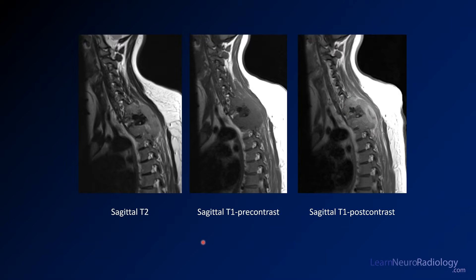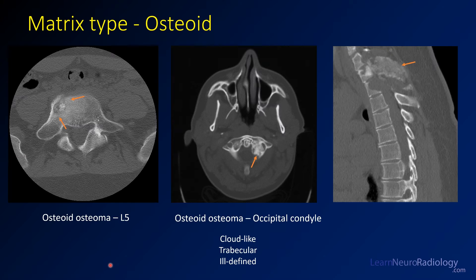When evaluating this mass you need to be thinking about aggressive lesions because of the extent of bone destruction and the associated soft tissue mass. Based on the features we've seen so far we know this is an aggressive mass, and when you see new bone formation it can help with your diagnosis if you try to determine what kind of new bone matrix you're looking at.